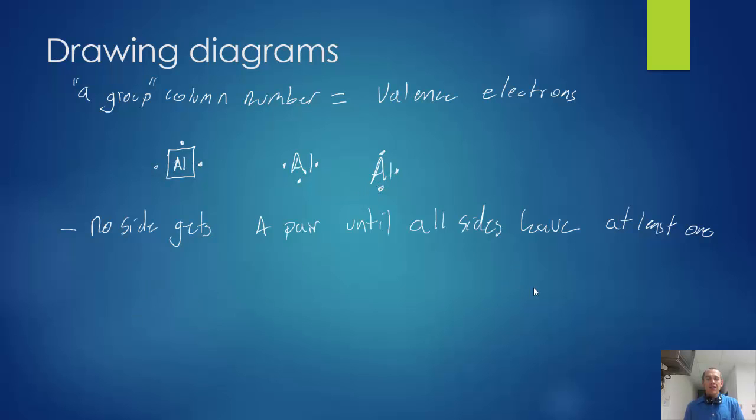So if we look at oxygen, oxygen is a group 6 element, 6a, which means it's got 1, 2, 3, 4, 5, 6 valence electrons. You'll notice there's a pair on the top, a pair on the right, but the left and bottom, they're unpaired.